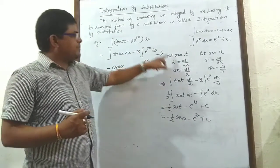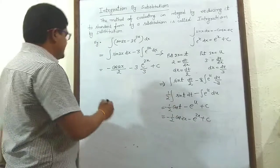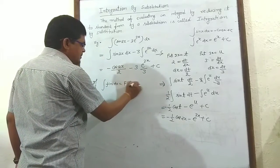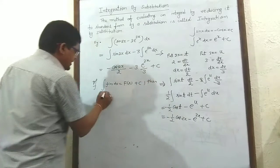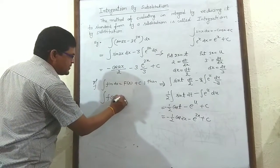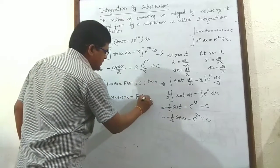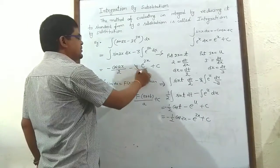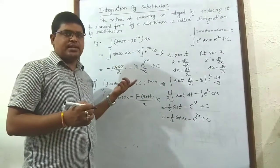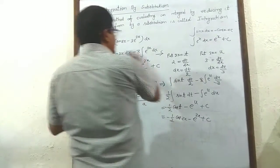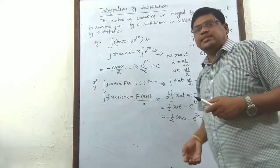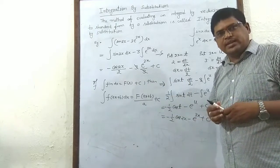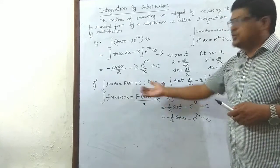See how long that question became using the process. If you remember the concept — that the integral of f(ax+b) dx equals F(ax+b) upon a plus c — you can solve it in one line. With two terms it required two substitutions. For even bigger integrals, doing the full process every time makes the question very long, so we use the direct application.